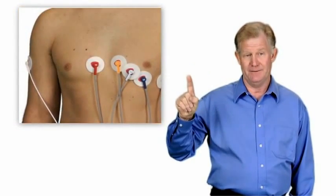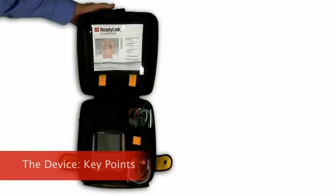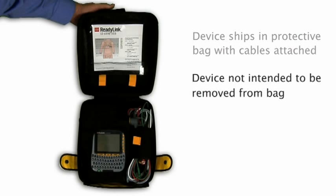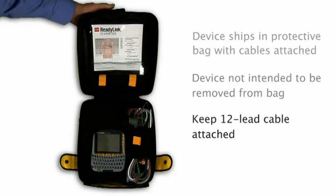In this video, we will walk through the three main steps. Since this device depends on a cellular connection to the internet, we'll also talk about what to do if the transmission does not go through. A couple of points about the device: when you receive it, it will already be in a protective bag with all of the cables attached. This bag serves to protect it from damage, so the device is not intended to be removed from the bag. We recommend that you keep the 12-lead cable attached to the device so it is ready to go when you need it. Check for cable damage prior to each use.